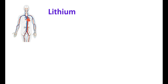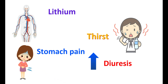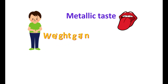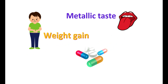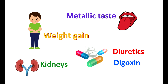Lithium should be carefully given due to several side effects. It increases diuresis, resulting in loss of water from the body and increased thirst. It can also produce stomach pain, nausea, weakness, metallic taste in the mouth, and weight gain. Lithium interacts with other medications like diuretics and cardiac glycosides such as digoxin. Long-term use can affect the kidneys, requiring regular blood tests to monitor kidney function.